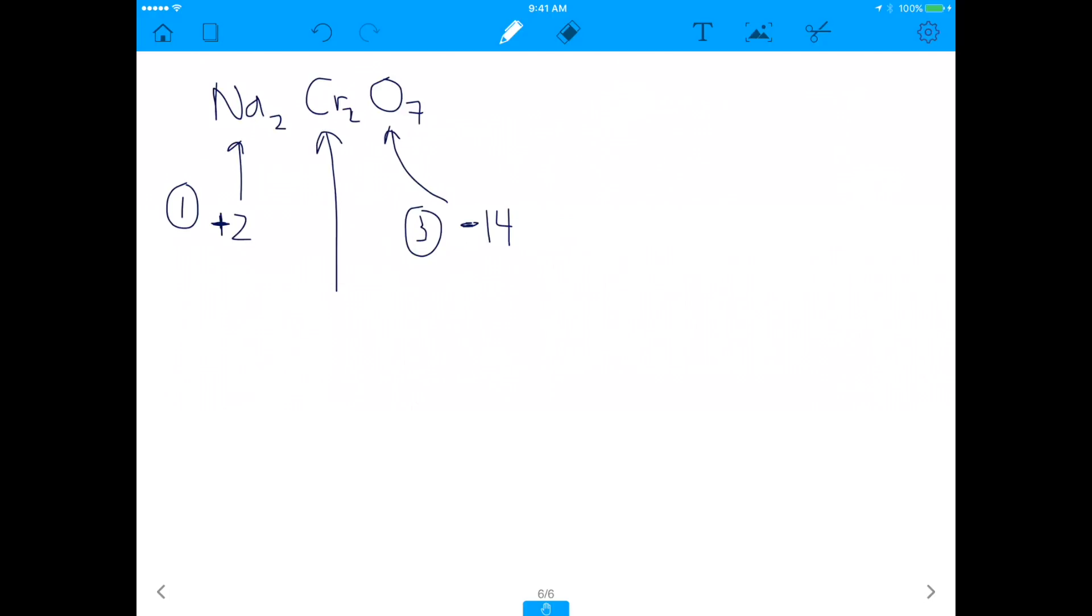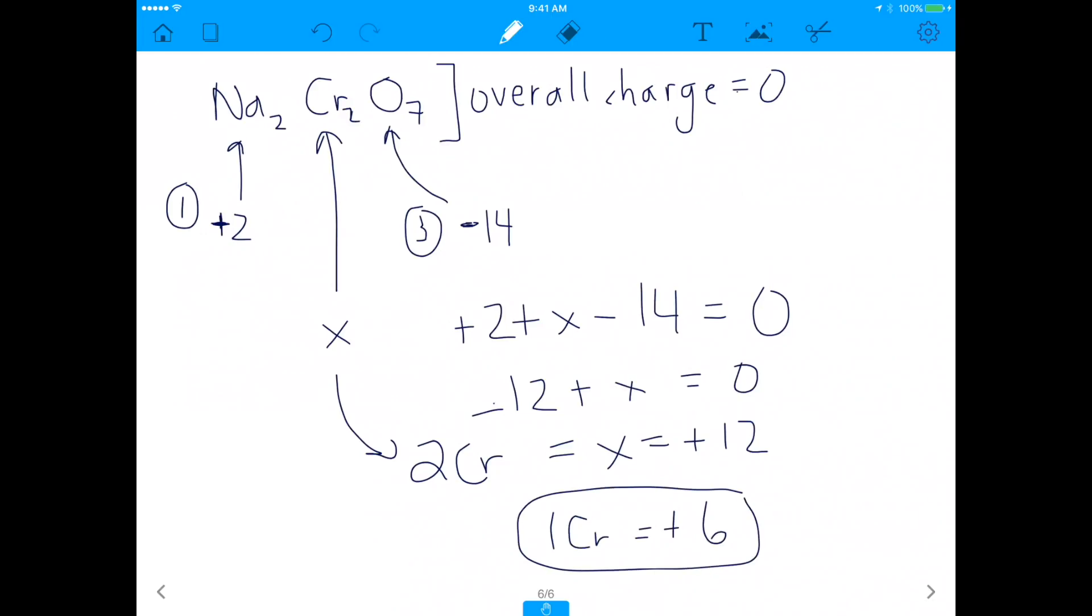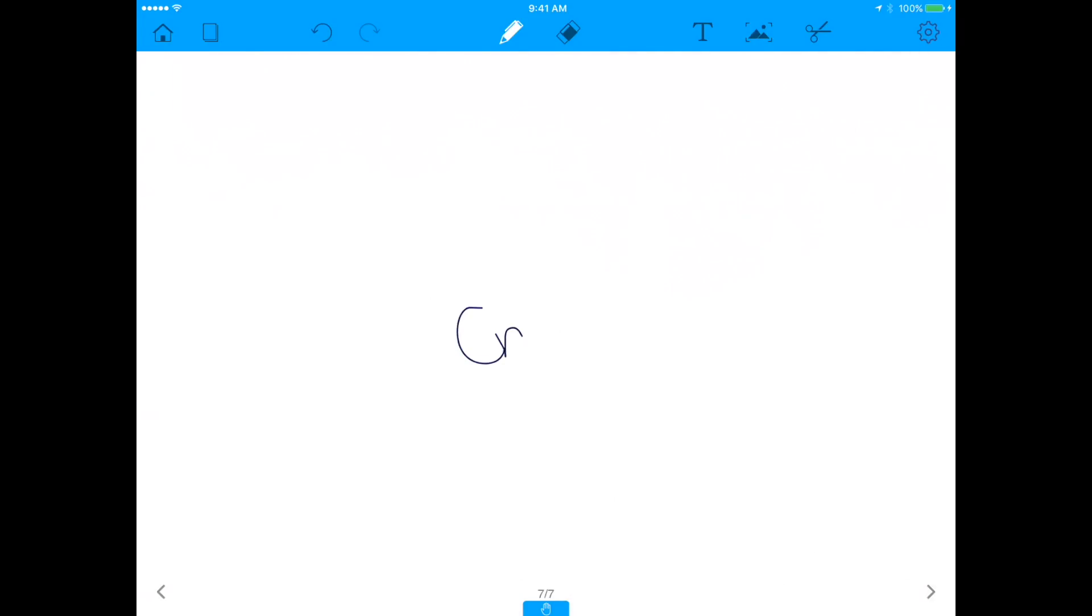So now we have to figure out the oxidation number of chromium here. Remember the sum of the oxidation numbers has to add up to the overall charge, and here the overall charge is zero. There is no charge on this molecule. So if we assume that the oxidation number of the two chromiums is X, then you can say plus two plus X minus 14 is equal to zero, and that would give you negative 12 plus X is equal to zero, and that would mean that X is equal to positive 12. But remember, X is representing two chromiums. That means the charge on one chromium is plus six. And so the answer to this question is that the oxidation number of chromium in this compound is plus six.